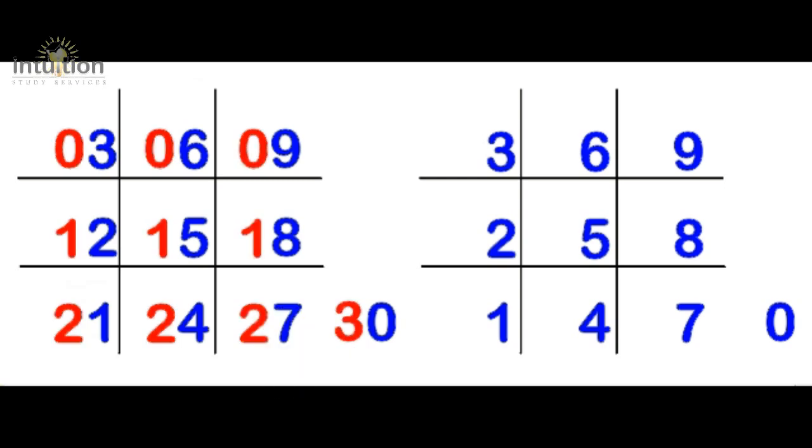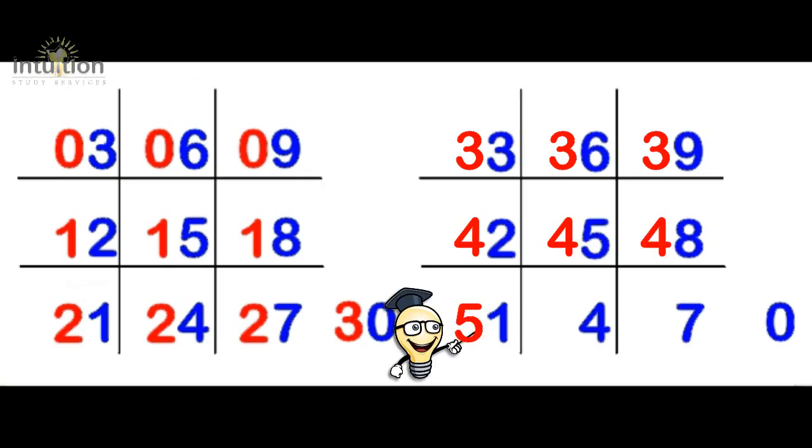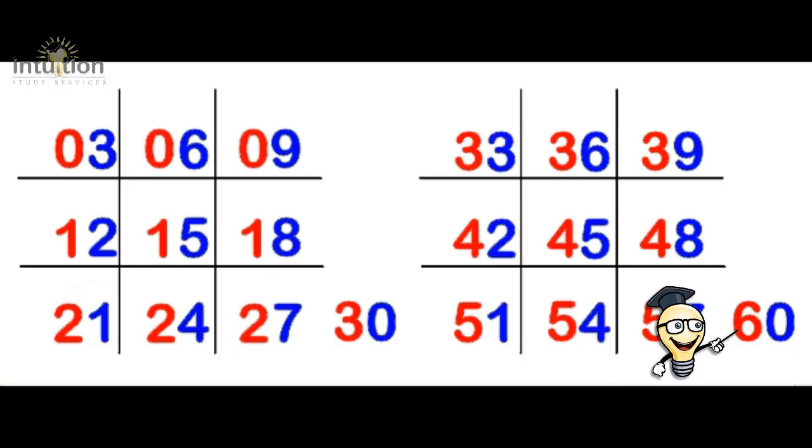And in the second grid we start from the top row again and we fill in with the number 3 this time. So write 3, 3, 3 in each column. Then in the second row we fill in with the number 4 in each column. 4, 4, 4. And then in the bottom row we fill in with the number 5 in each column. So write 5, 5, 5. And then finally we put a 6 with a 0 on the outside.